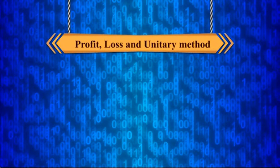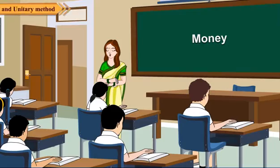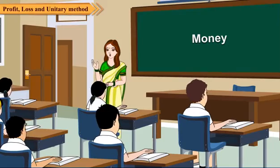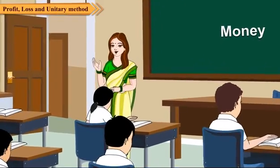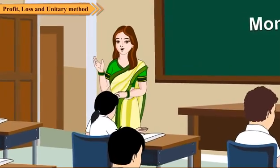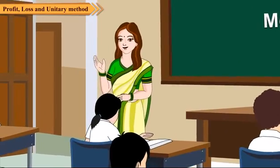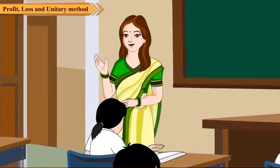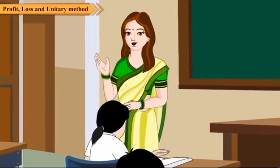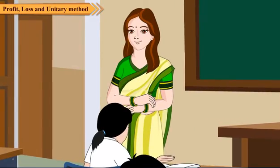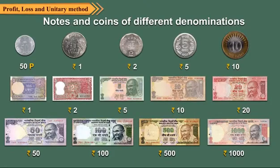Profit, Loss and Unitary Method. In the previous classes, we have read about money. We need money to buy things. Indian money is found in the form of rupees and paisa. We also have coins and notes, which are found in different denominations.